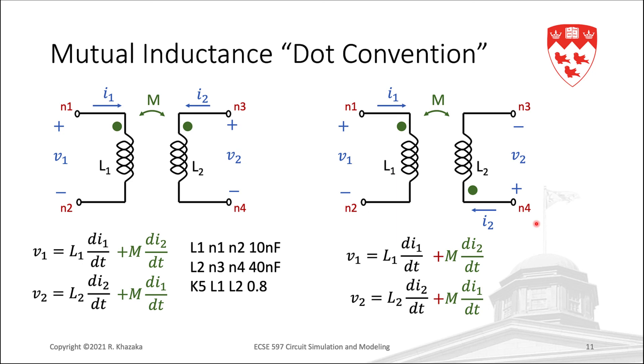As I mentioned before, the convention is always to put the dotted node first. So the moral of the story is that we only need one model and therefore one stamp.